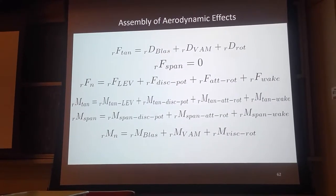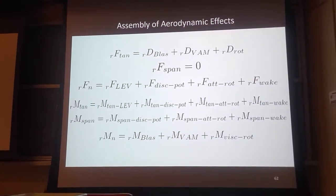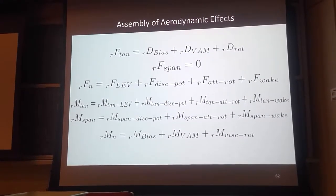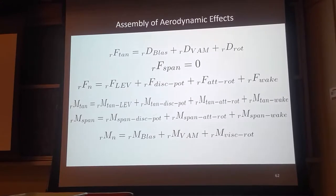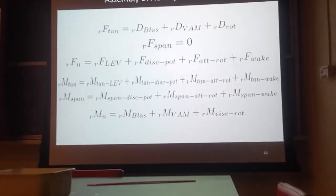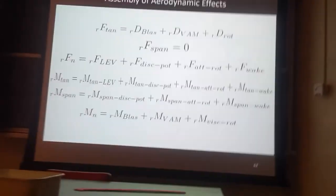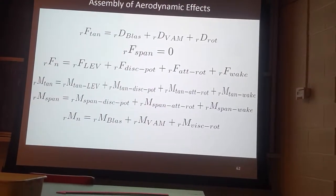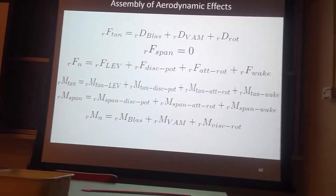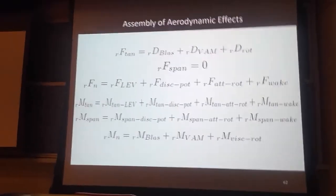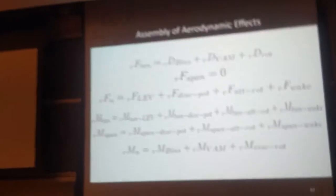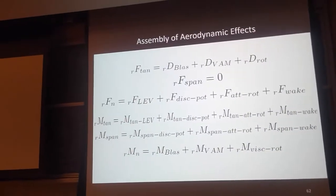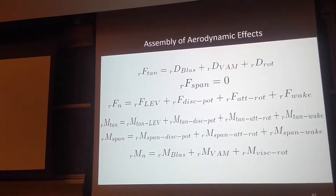We sum up the effect of the leading edge vortex, which is decreased by the tip vortices, and our discontinuous potential flow. We do use the vortex lattice flow, but only the rotational component, because the translational component was already accounted for in the leading edge vortex and discontinuous potential flow. We also sum up the effect of the wake calculated by the vortex lattice method, but with the velocity induced on the wing by the wake.